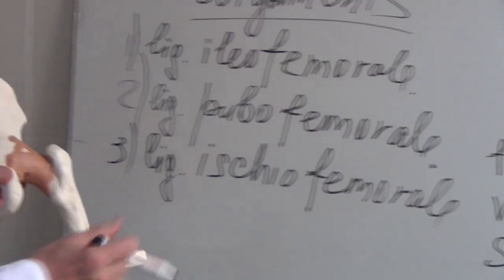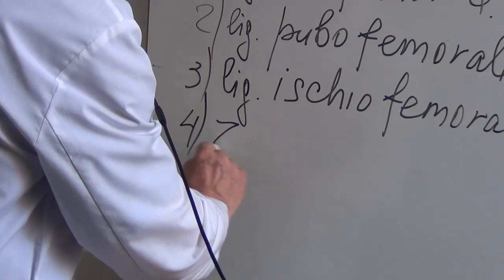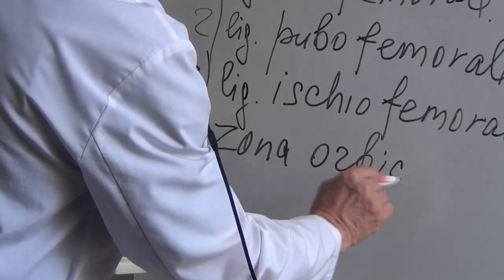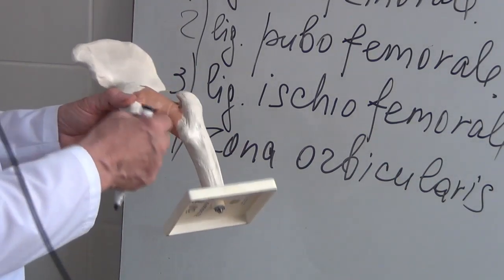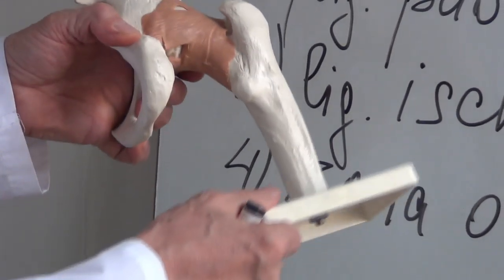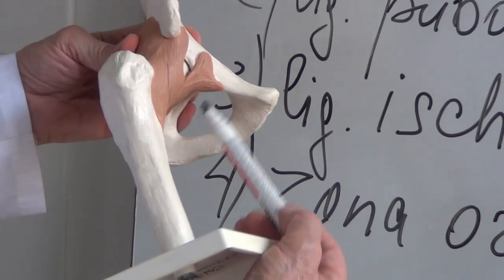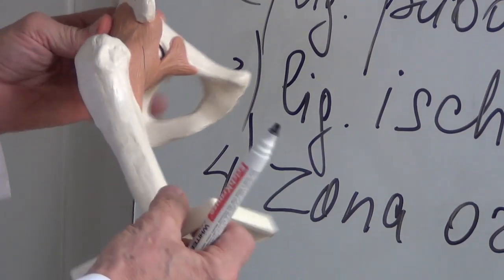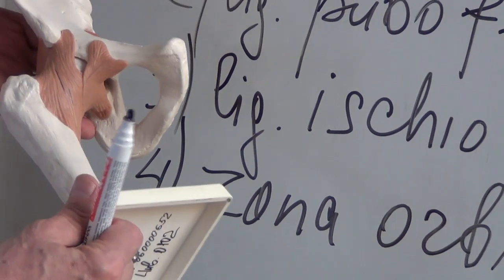And the last fourth ligament called as zona orbicularis. It means the bundle which surrounds the caput and collum femoris from all sides. This is the ligament which is called zona orbicularis. It surrounds the articulating capsule from all sides and reinforces it.